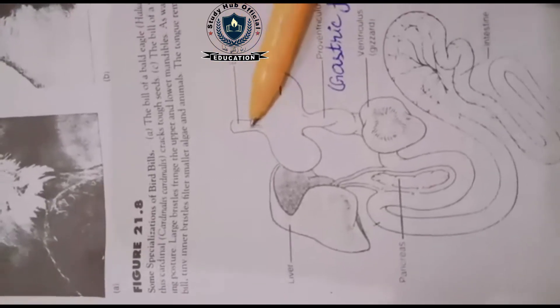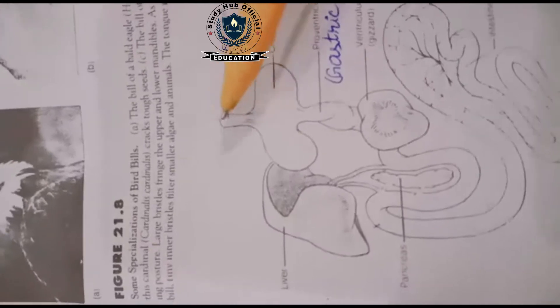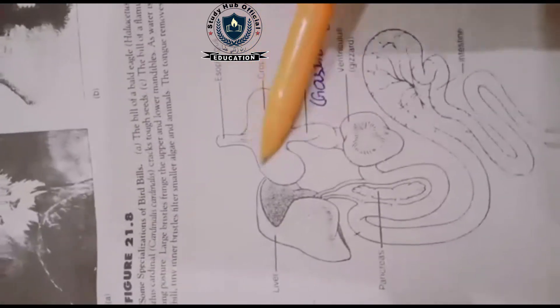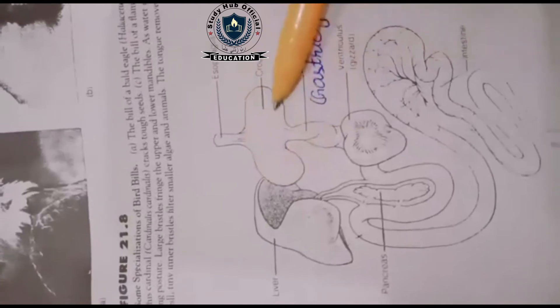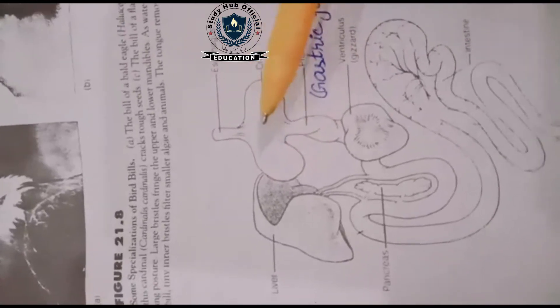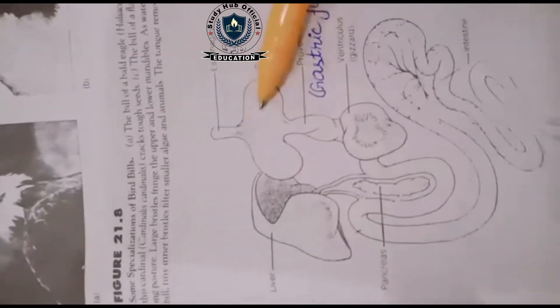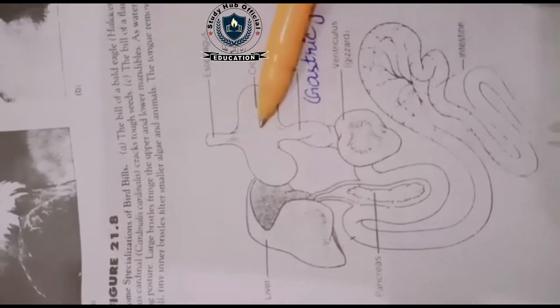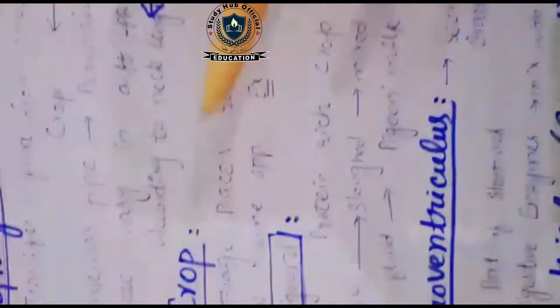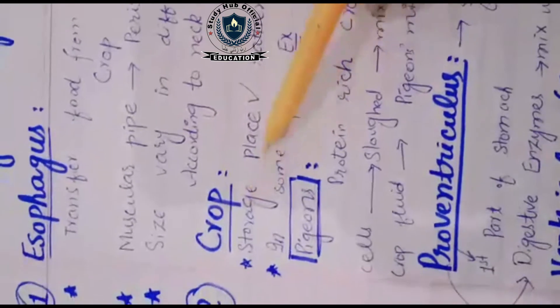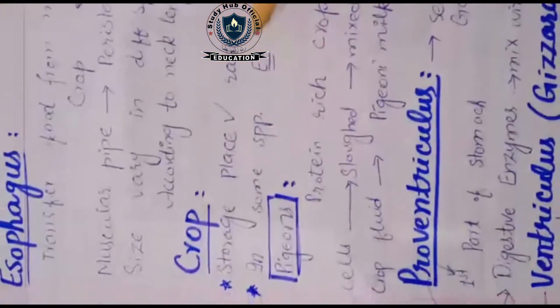The next structure is crop. The food is coming here. What is the function of this? Crop is basically a storage place, a storage organ rather than a digestive organ. It's not for digestion.